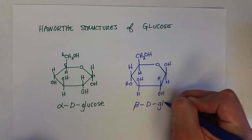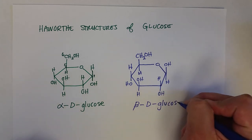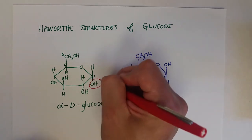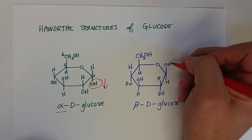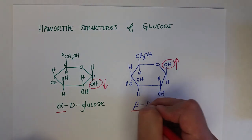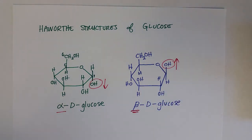And if instead the hydroxyl group is in the up position, that gives rise to the beta isomer. So this is beta D-glucose. Again, hydroxyl group down: alpha. If the hydroxyl group is up in the structure: beta.